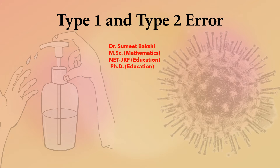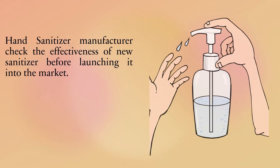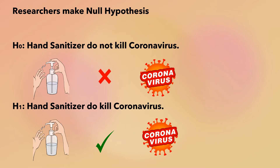Let's start this video. A hand sanitizer manufacturer wants to check the effectiveness of a new sanitizer before launching it into the market. For that, the researchers make the null hypothesis: H₀ is 'hand sanitizer does not kill coronavirus.' Then the alternative hypothesis will be 'hand sanitizer does kill coronavirus.'